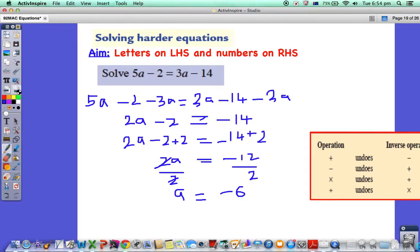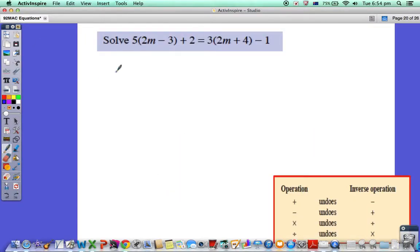Now let's look at the next one, which has brackets. First thing we need to do is expand the brackets and collect like terms. We've got 5, we're going to multiply across on this side and over. 5 times 2m is 10m, so 10m minus 15 plus 2 equals 6m plus 12. And don't forget that minus 1.